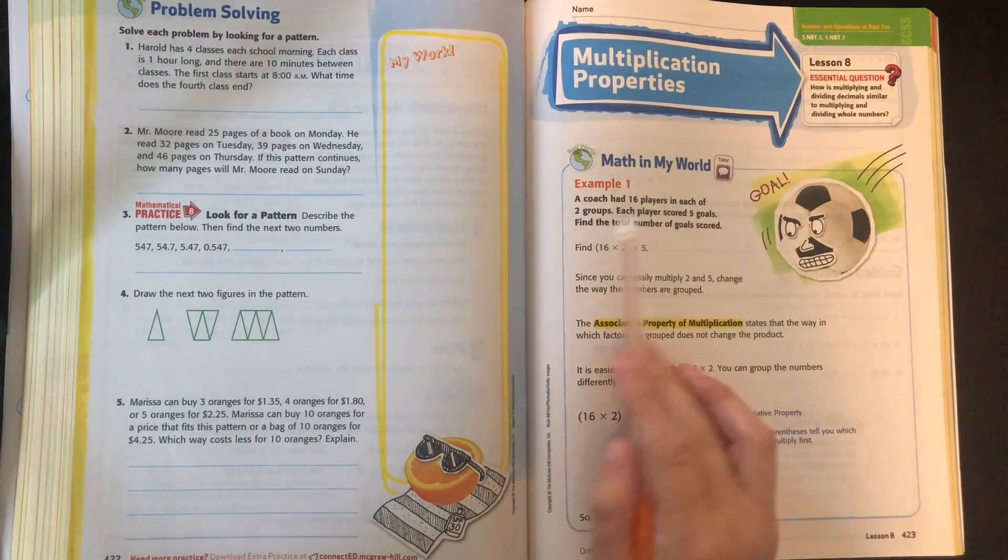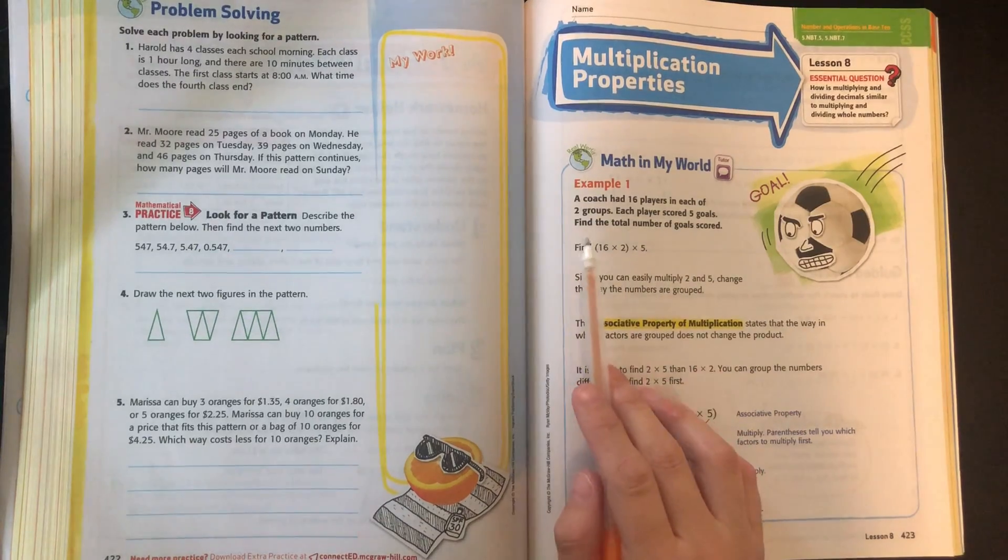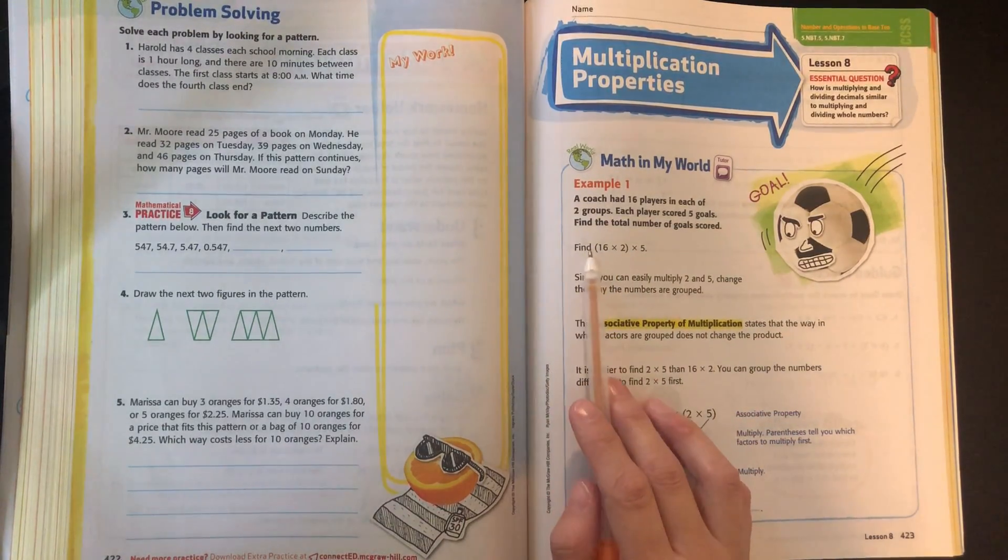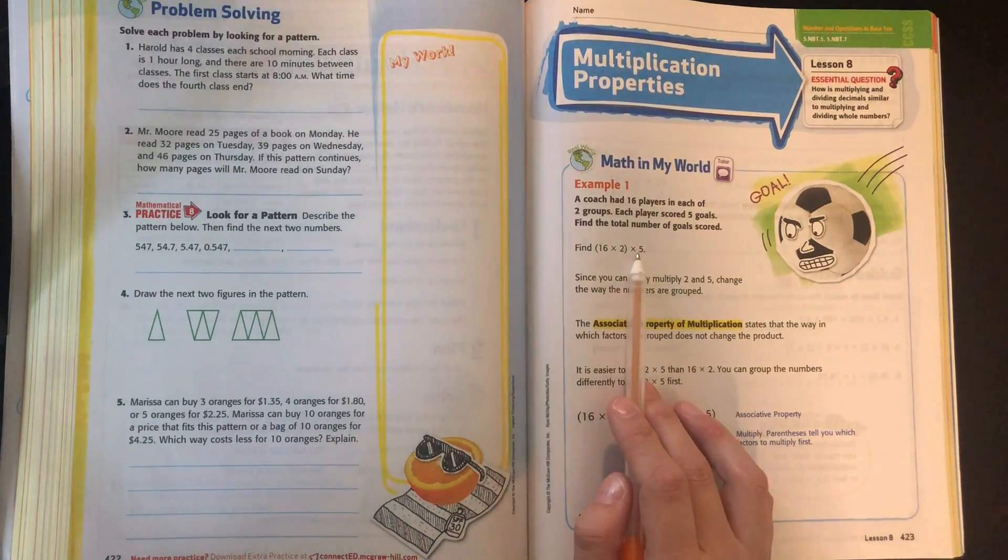So the coach had 16 players in each of the two groups. Each player scored five goals. Find the total number of goals scored. So that means it's asking you to find the quantity 16 times 2 times 5.